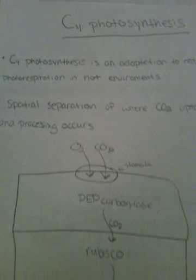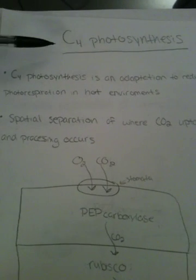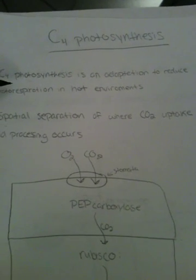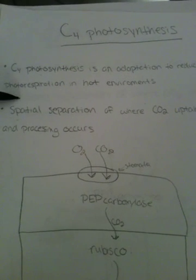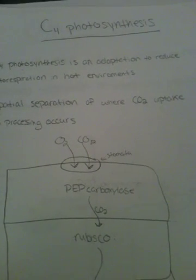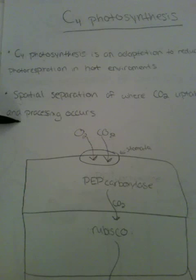The first of those two we're going to talk about is C4 photosynthesis. C4 photosynthesis is an adaptation to reduce photorespiration in hot environments. It is a spatial separation of where CO2 uptake and processing occurs.